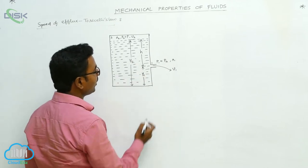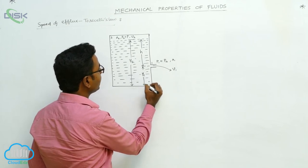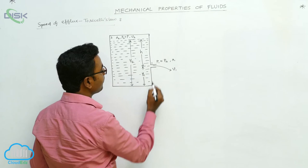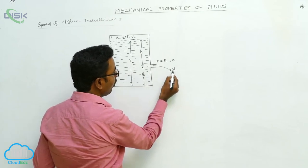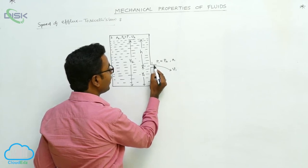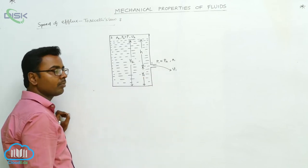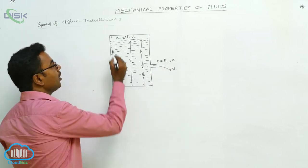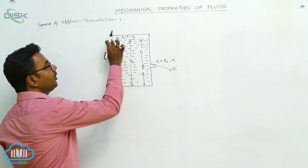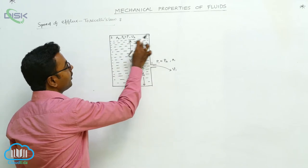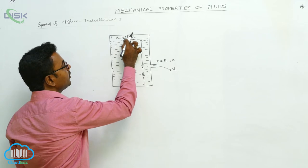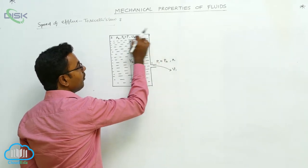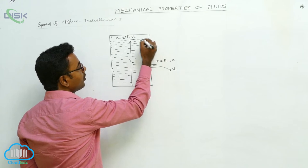In this tank, the orifice is at a height Y1 from the bottom of the tank, and the top surface of the fluid is at a height Y2 from the bottom. The outflow of fluid has speed V1, and this orifice is open to the atmosphere, so at point 1 the pressure P1 equals atmospheric pressure PA, and the area of the orifice is A1. At the top surface, we take point 2, where the area of the fluid is A2, the pressure is P, and the velocity with which the top fluid falls down is V2.